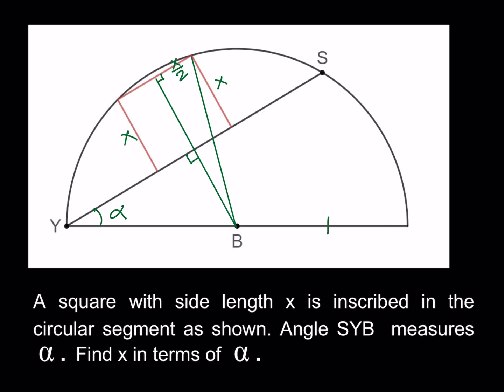Since the radius is one, the segment YB is also one because it's a radius. We have a right triangle that includes alpha, so since sine alpha equals opposite over hypotenuse and the hypotenuse equals one — like a unit circle — this length from the center to that point is sine alpha.